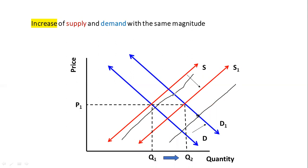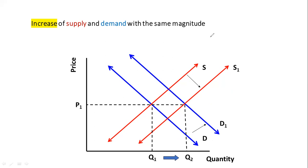If supply shifts less, prices will be higher. So prices can be at a higher level, the same level, or a lower level — all three possibilities exist. In all three cases, the quantity will increase. We name this situation ambiguous or uncertain prices. In general, when both supply and demand increase, prices are ambiguous and quantity increases. When both decrease, prices are ambiguous and quantity decreases.